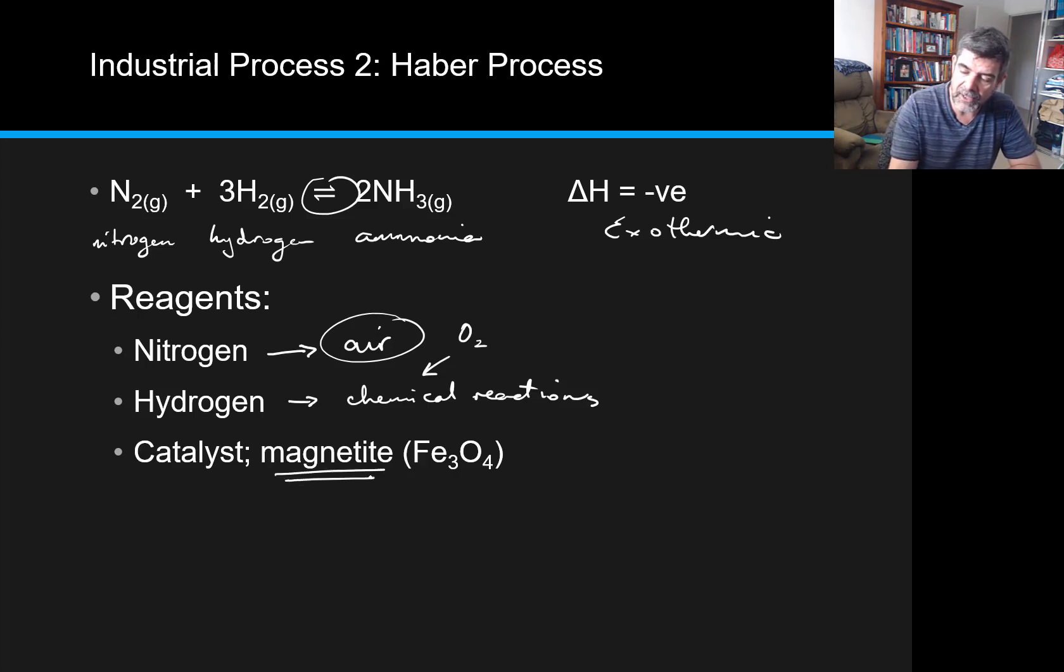The Haber process also uses a catalyst which is magnetite. But more importantly, our understanding of equilibria or equilibrium systems allows us to manipulate the conditions in different ways in order to help us to maximize the yield. That is to get as much of the ammonia as we possibly can.